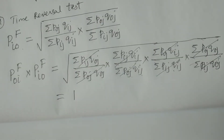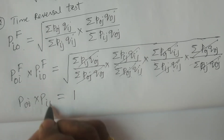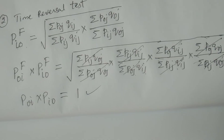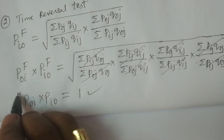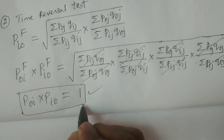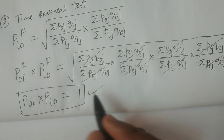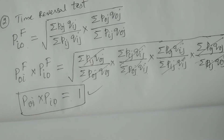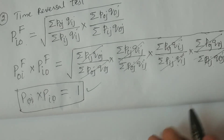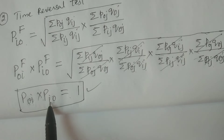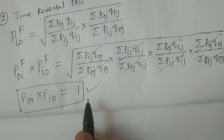Therefore, P₀ᵢ × Pᵢ₀ = 1. Fisher index satisfies the time reversal test. To satisfy the time reversal test, we prove that P₀ᵢ into Pᵢ₀ equals 1 — meaning even if you interchange the two time periods, it gives a consistent result. This is the statement given by Fisher, and it is proved.